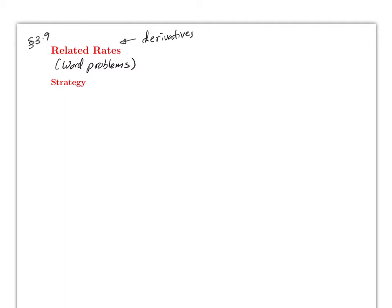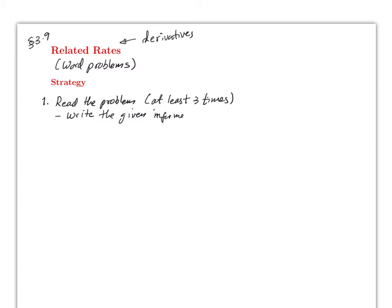Every book has a slightly different strategy, but most have the same idea. First, read the problem at least three times. Once you've read it, write down the given information. Step two: once you've read the problem multiple times and written the given information, it can be very useful to draw a diagram or picture.